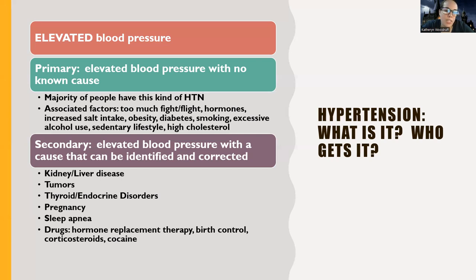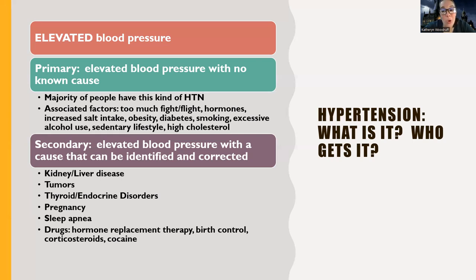Secondary causes include things like kidney or liver disease, tumors, and endocrine disorders — treating those can lower the blood pressure. With secondary hypertension, there's something else in the body leading to the high blood pressure. With primary, we don't really know what's leading to it, but here are some factors that may be contributing.